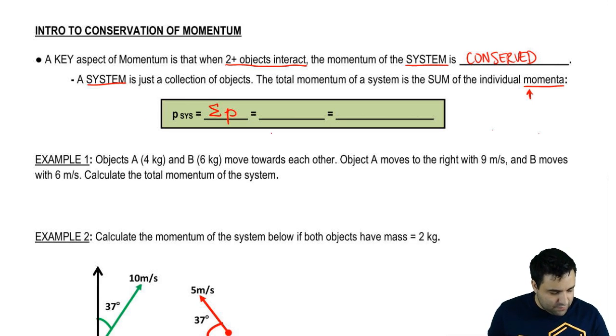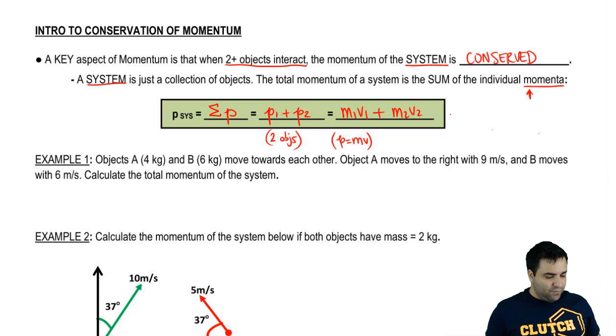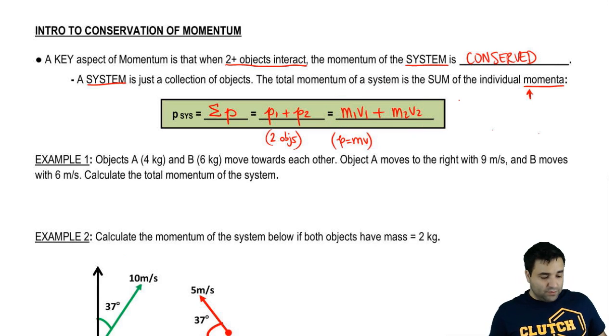For two objects, you would have something like P1 plus P2. Now remember, P equals MV. So we're going to take this one step further. Instead of P, I'm going to write MV. So it's going to look like M1V1 plus M2V2. If you've gone to class and your professor's talked about momentum already, you will at the very least remember that he wrote this a lot. We're going to be seeing a lot of M1V1, M2V2.